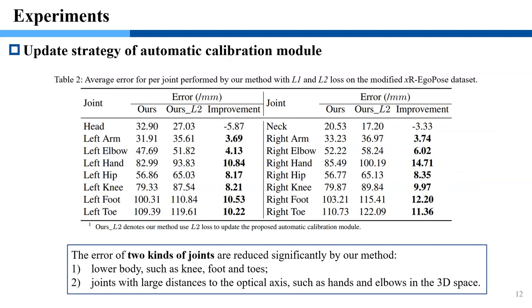We test the update strategy on the modified xR-EgoPose dataset as reported in Table 2. We find that the error of two kinds of joints are reduced significantly by our method. The first is lower body, and the second is joints with large distance to the optical axis.